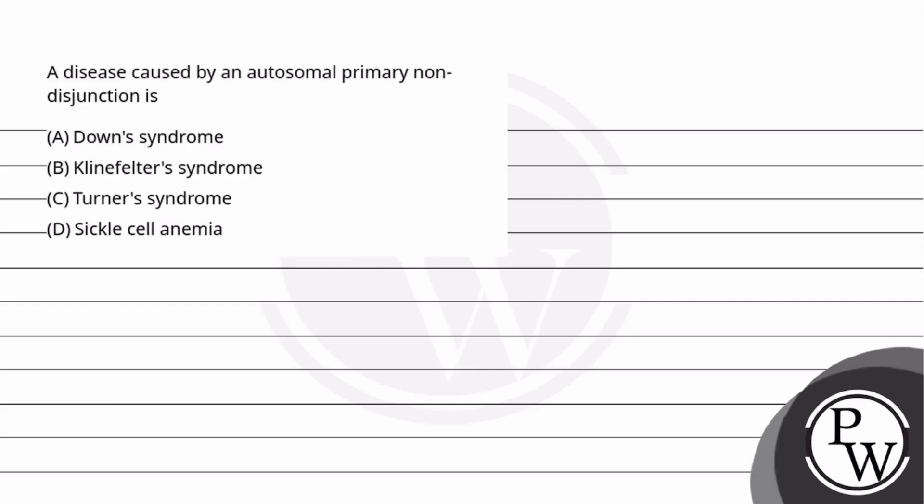Hello, let's see the question. A disease caused by an autosomal primary non-disjunction is: A. Down syndrome, B. Klinefelter's syndrome, C. Turner syndrome, D. Sickle cell anemia.